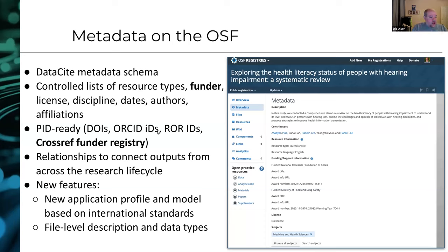Just recently it was announced that the Crossref Funder Registry is going to start sunsetting over the next year or more, and the ROR ID is going to take over that function of representing the identifier for a funder. We're already prepared for that switch because we already use ROR IDs for institutions. That's not something you have to worry about right now, but something to think about — make sure you have a ROR ID.